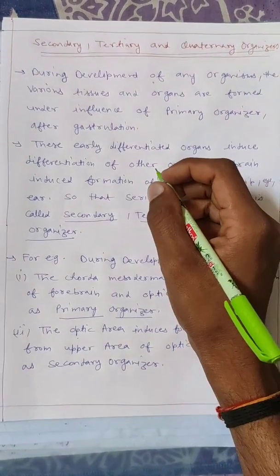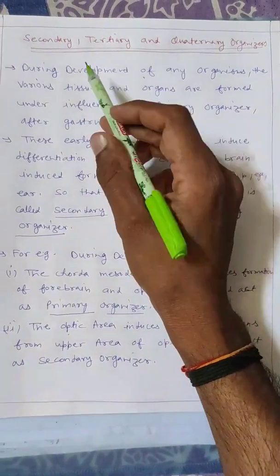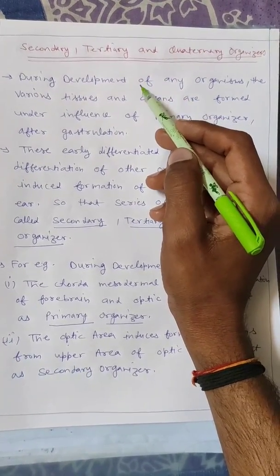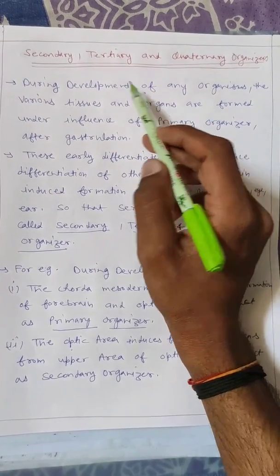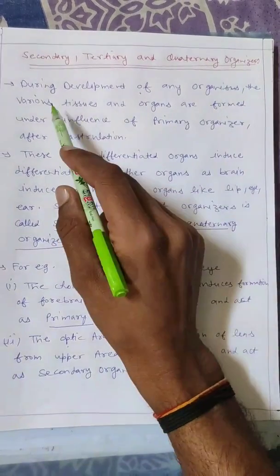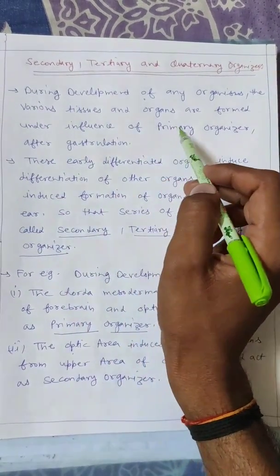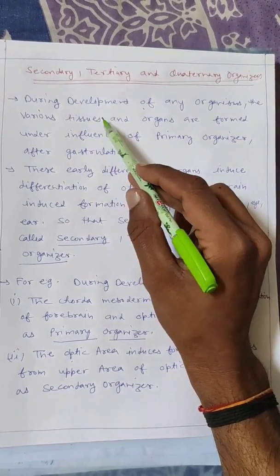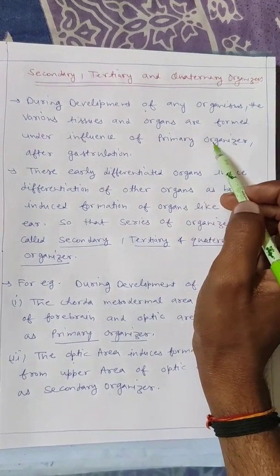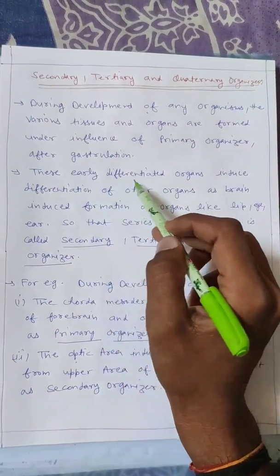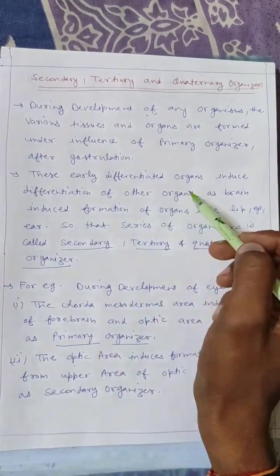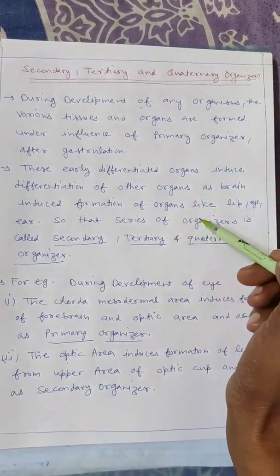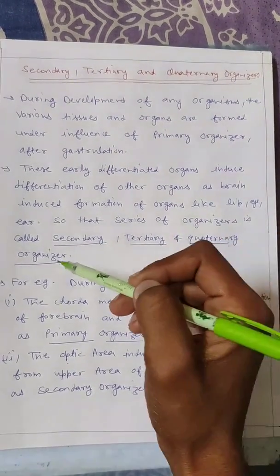Welcome back students. In this video lecture, we discuss the three terms: secondary, tertiary, and quaternary organizers. In the previous lecture, we discussed the characteristics of organizers or inductors. During development of any organism, the various tissues and organs are formed under influence of primary organizers after gastrulation. These early differentiated organs induce differentiation of other organs — as the brain induces formation of organs like lip, eye, and ear — so that a series of organizers is called secondary, tertiary, and quaternary organizers.